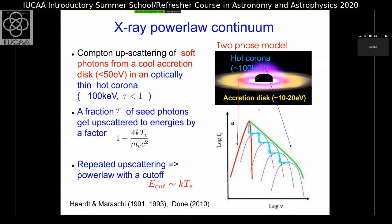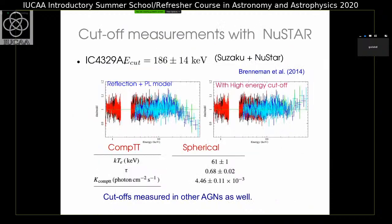By measuring the cutoff of the X-ray spectrum, you measure the temperature of the hot corona. This has been done for a number of AGN with the NuSTAR mission launched by NASA. One example is the broadband X-ray continuum spectrum of AGN IC 4329A. When you fit the X-ray spectrum with a power-law model plus reflection, there is a deficit of emission above about 100 keV. The cutoff measured is 186 keV. Using the thermal Comptonization model, the corona temperature turns out to be 61 keV and the optical depth is about 0.7.